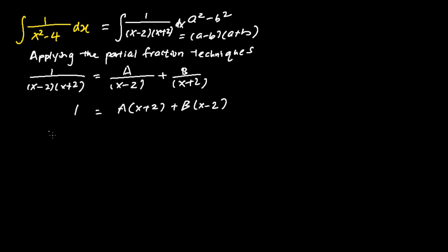To solve for A, we substitute x equals 2. Hence we get 1 equals A times 4, so A equals 1 quarter.